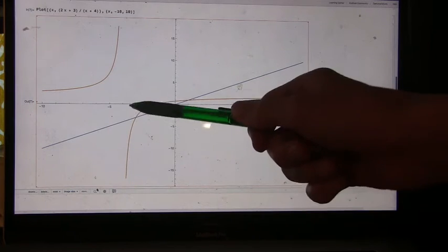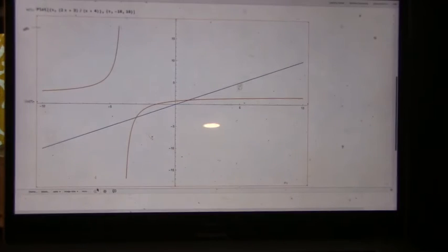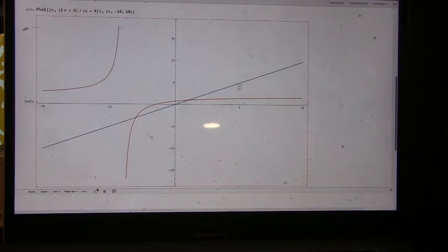Between negative 4 and this point, the blue line is now above, so these values don't make the equation true.